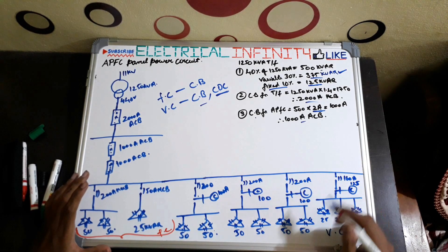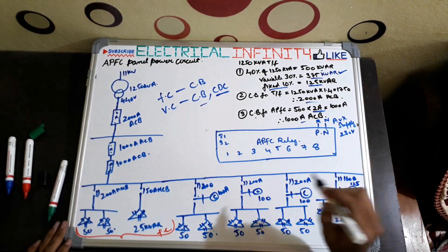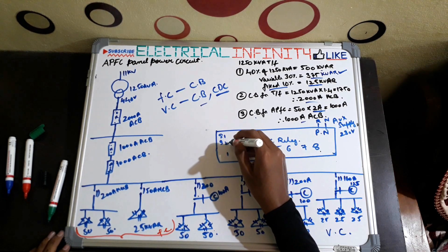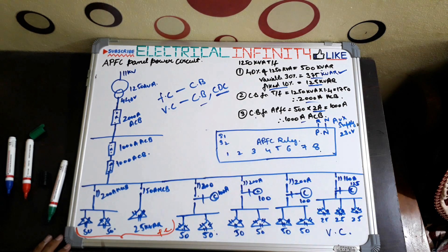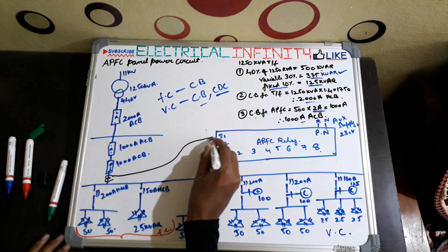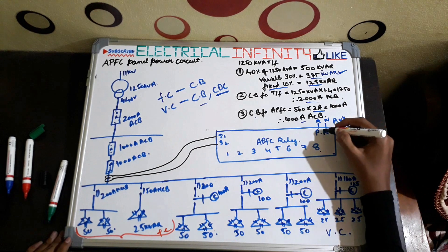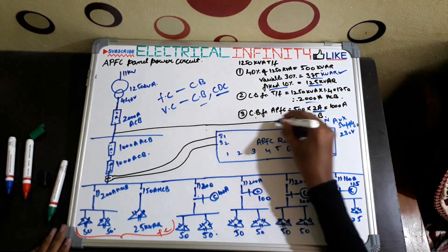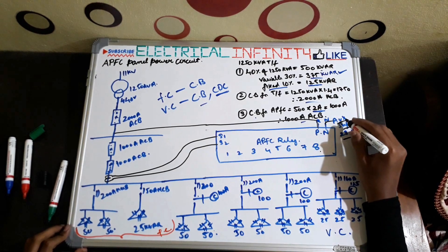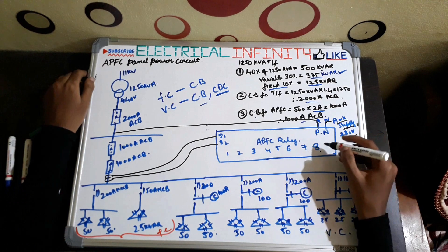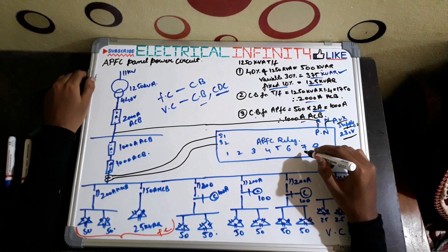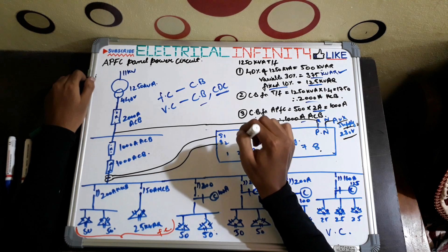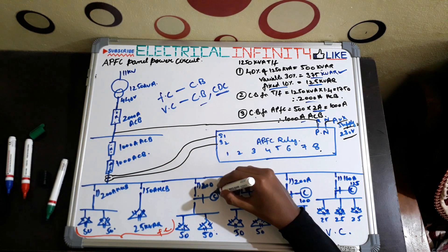Now let's do the connections of the capacitors to the APFC relay. The APFC relay has a maximum of 8 terminals for connecting CDCs, and it has terminals S1 and S2 which are connected to a CT for measuring current to detect whether it is lagging. The CT is connected to S1 and S2. One phase and neutral are taken for a 230V auxiliary supply to power the APFC relay. The fixed capacitors are not connected to the APFC relay.